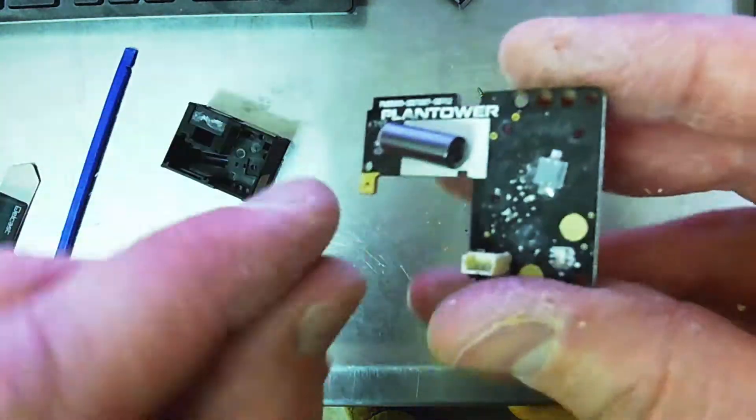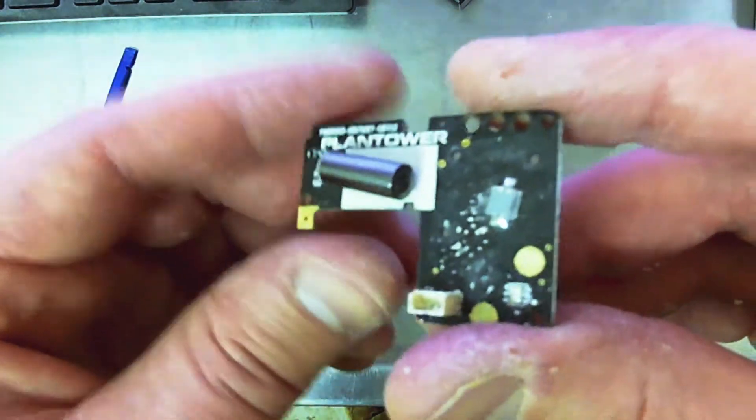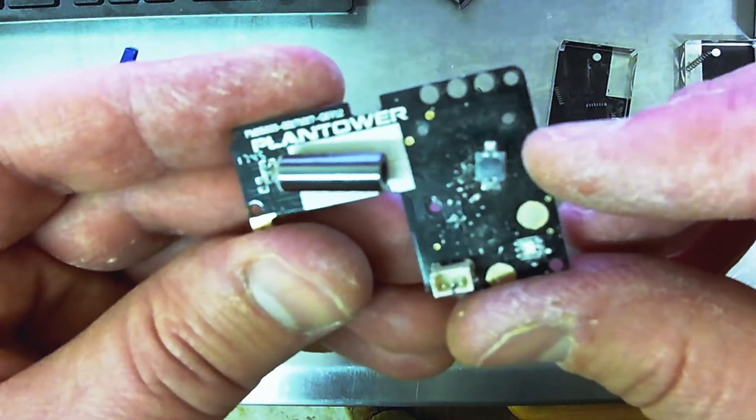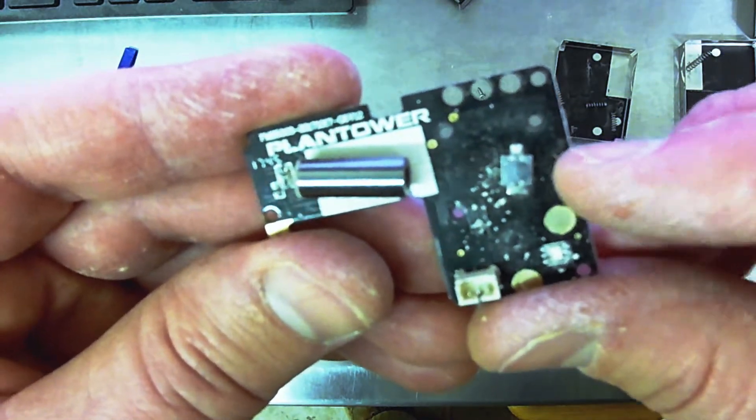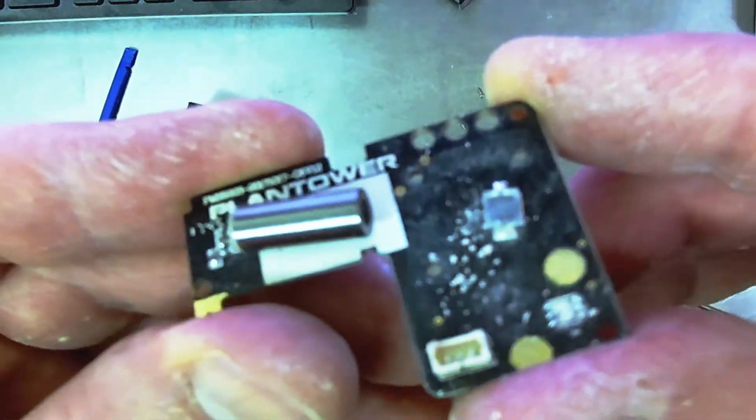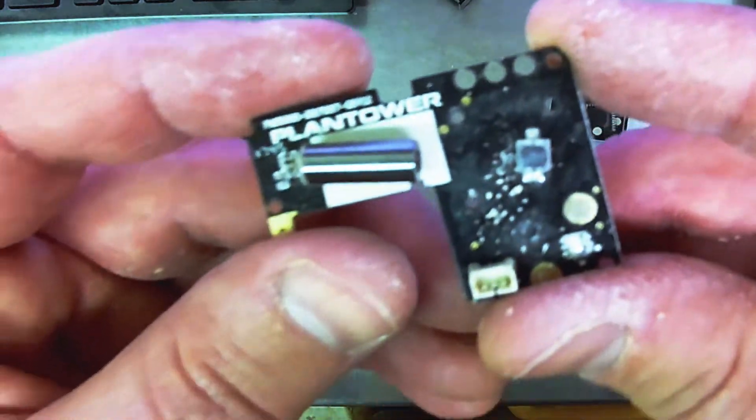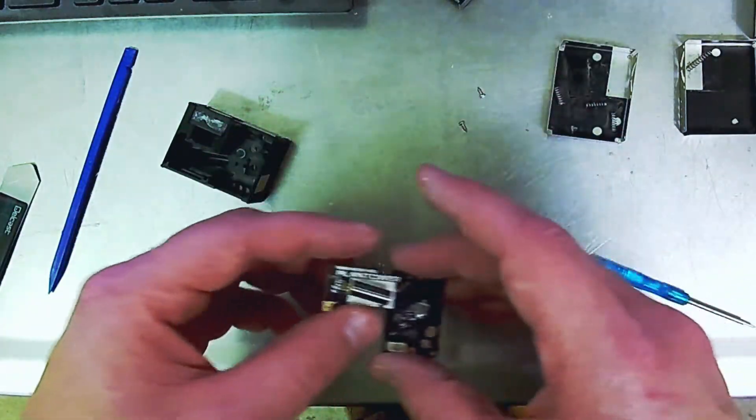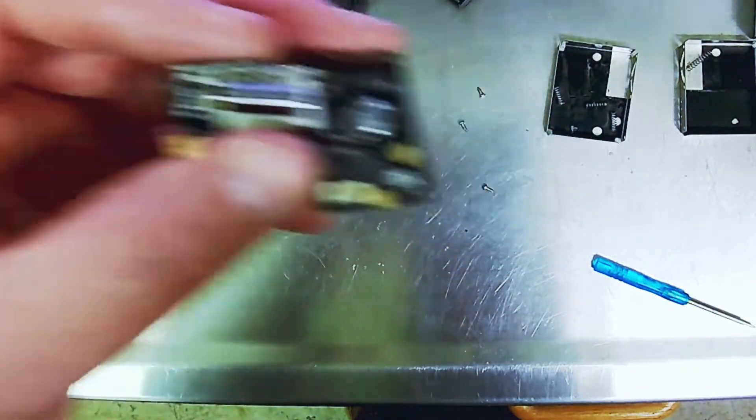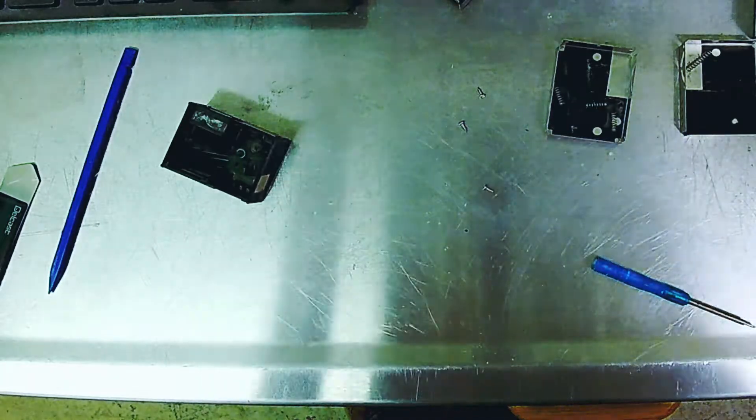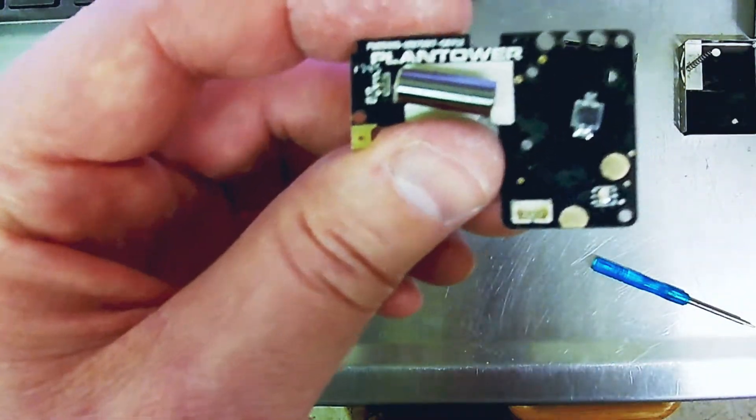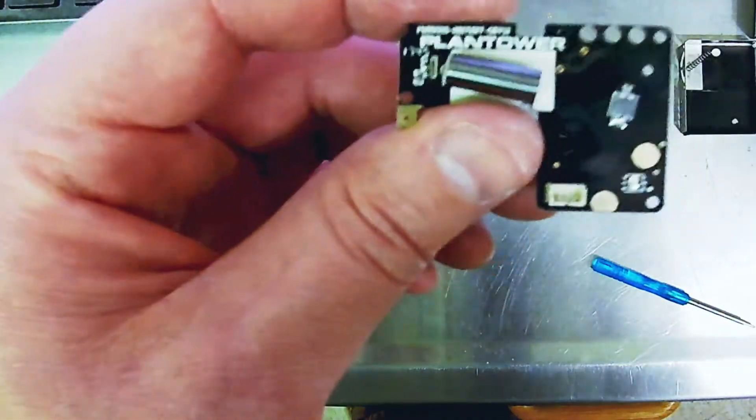So here we have the laser emitter. And there's the sensor, that square piece right in the middle. And this one is a little bit cloudy, a little dirty. I'm going to blow this off. And then I'm going to wipe it gently. So I got all the coarse dust off of that.